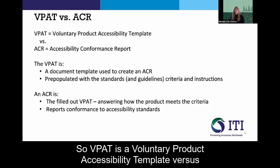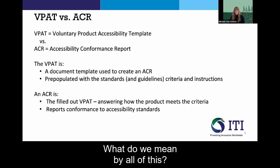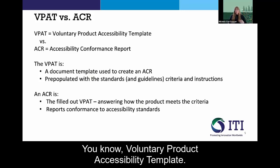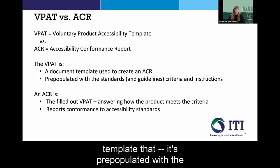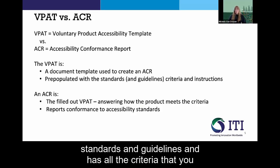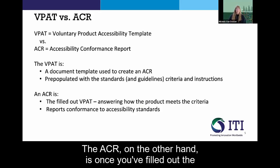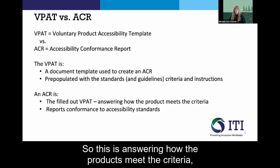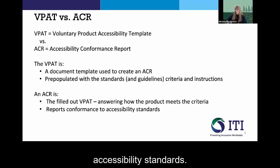The VPAT is the Voluntary Product Accessibility Template, while the ACR is the Accessibility Conformance Report. The VPAT is the template — pre-populated with the standards, guidelines, and all the criteria you need to complete, along with instructions on how to complete it. The ACR, on the other hand, is the report you produce once you've filled out the template. It answers how the products meet each individual criterion and documents conformance to the accessibility standards.